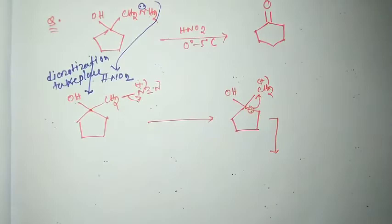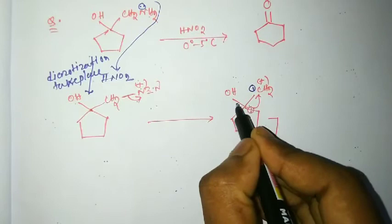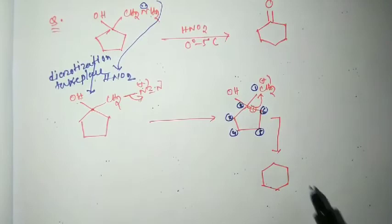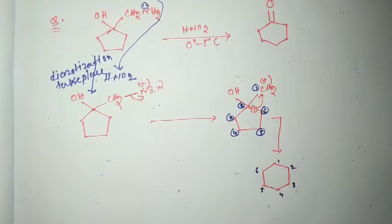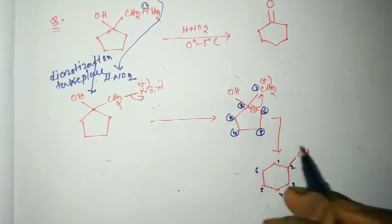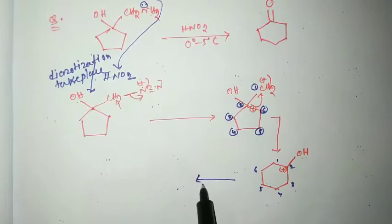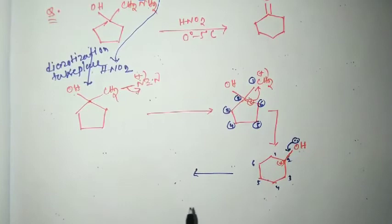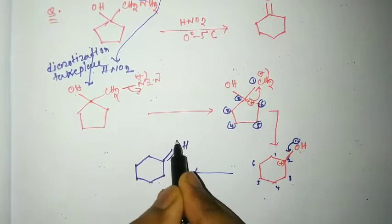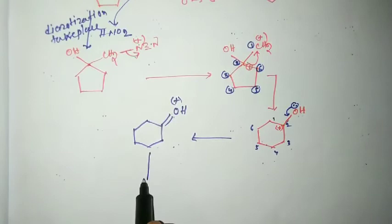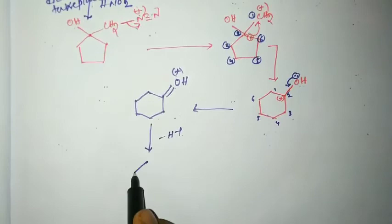Here the five-membered ring is converted to a six-membered ring — one, two, three, four, five, six. At the number two position, the OH group is present. On breaking of the sigma bond, a plus charge appears, and then the lone pair of oxygen comes back and a pi bond forms. The oxygen atom carries a positive charge, and then deprotonation takes place.